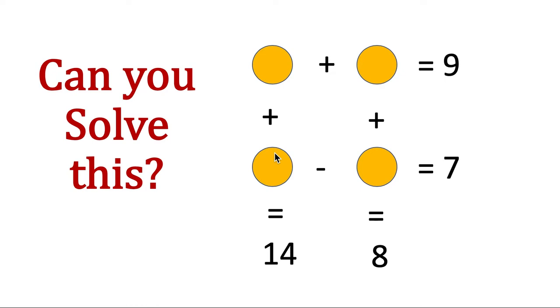Can you solve this simple mathematical problem? Here these yellow regions denote the unknown numbers. You have to find these four unknown numbers such that these mathematical operations are satisfied.